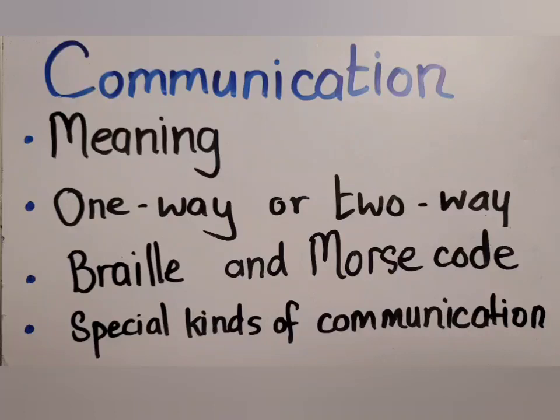So this is one-way communication. Other examples include the school bell, the doorbell, and the knocking on the door — these are all kinds of one-way communication. Now let's talk about some historical means of communication.